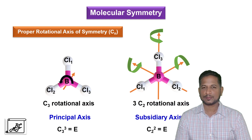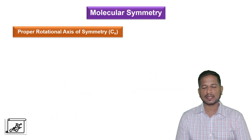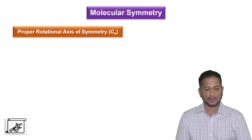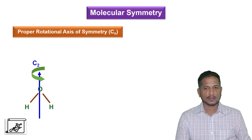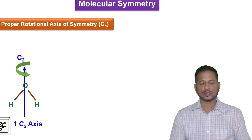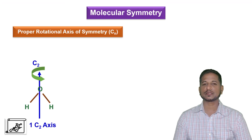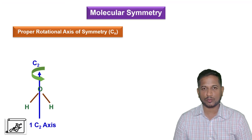Let us understand the proper rotational axis of symmetry through some more examples. For example, the water molecule — if I rotate the molecule in this way, we get an equivalent image, and if I rotate it again, I get an identical image. So this is the C2 axis of symmetry present in the water molecule.